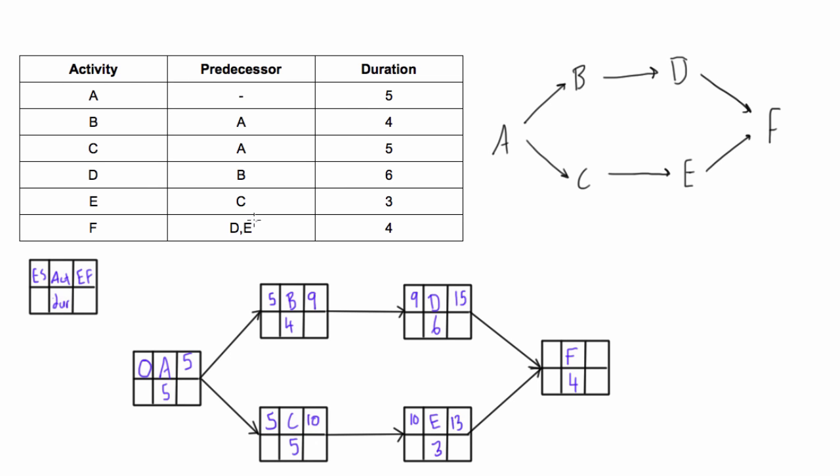So if we just started F at 13, that would violate the fact that it has to start after D is done. Because it has to start once both of them are done, you have to take the larger value. Otherwise, you'd be violating one of the predecessor relationships.